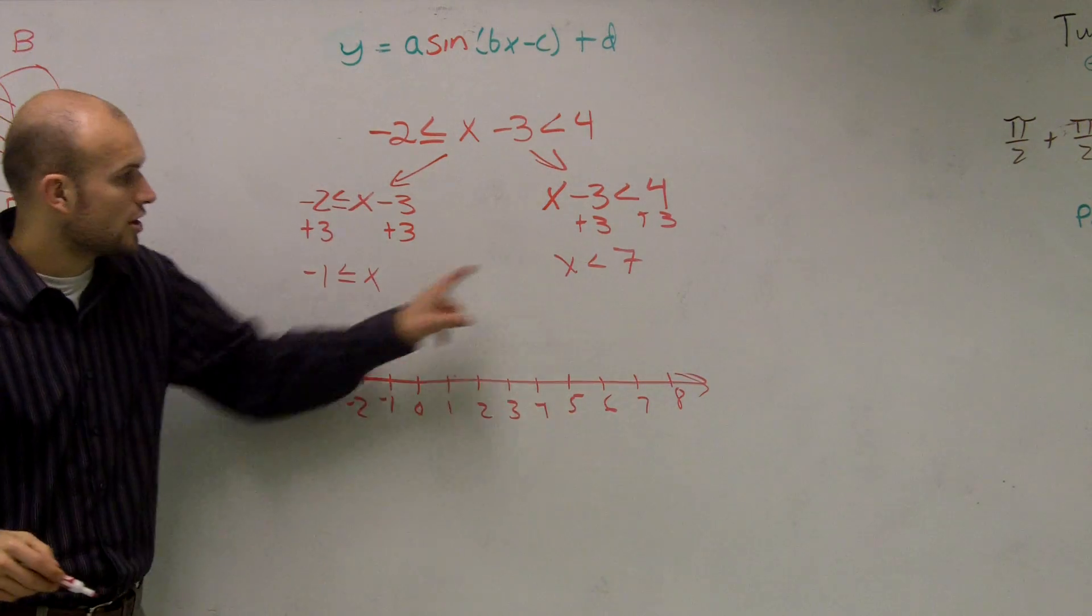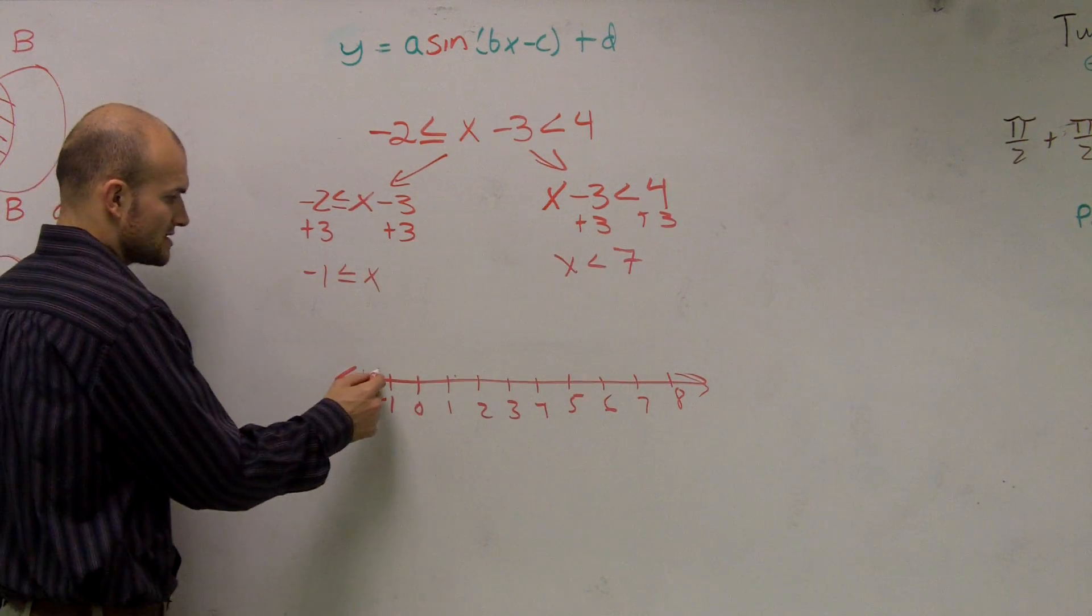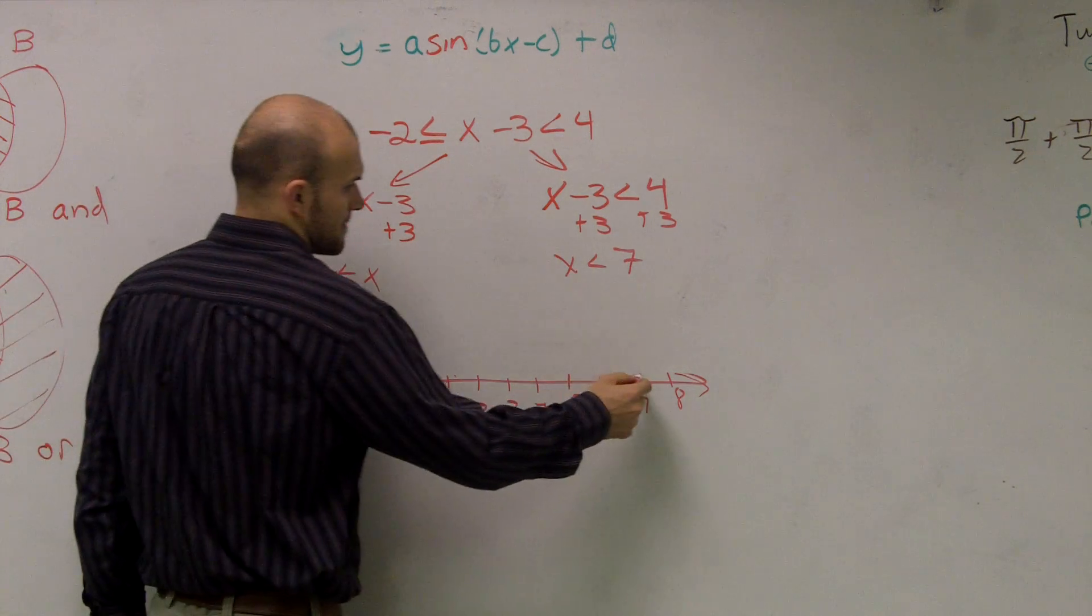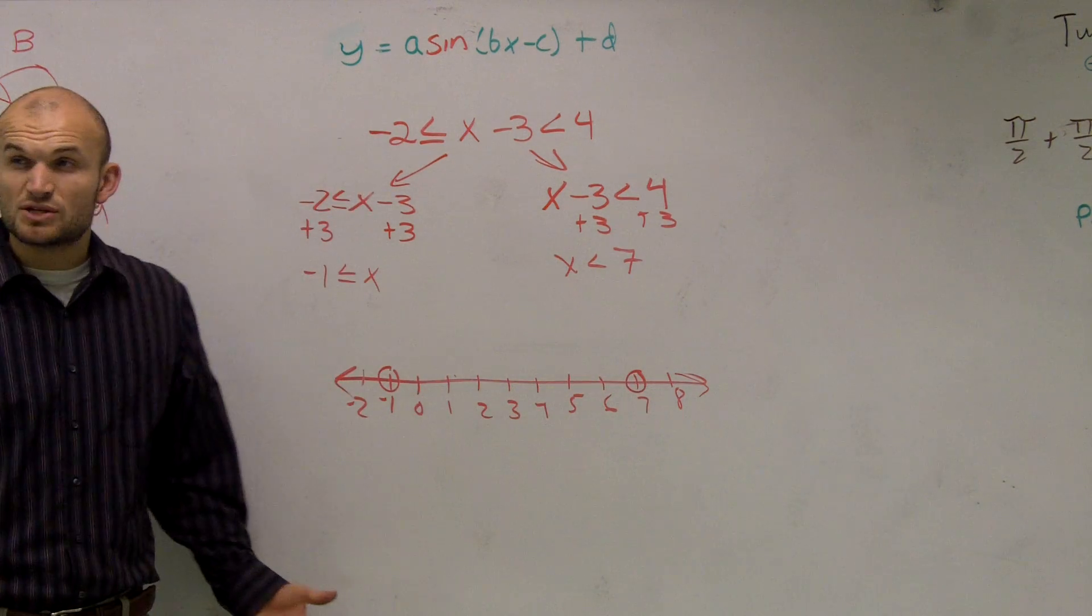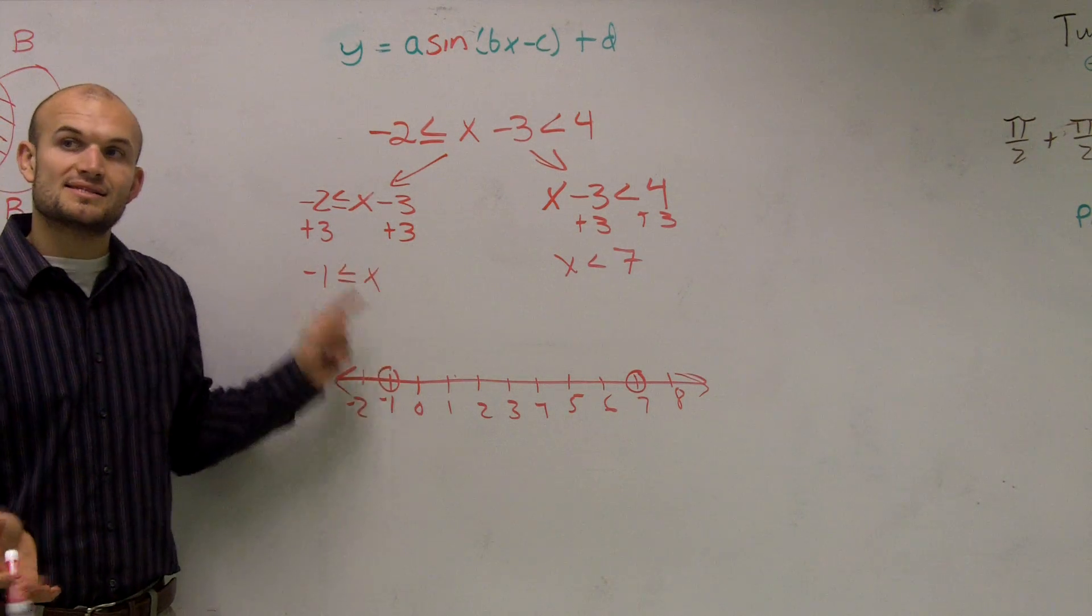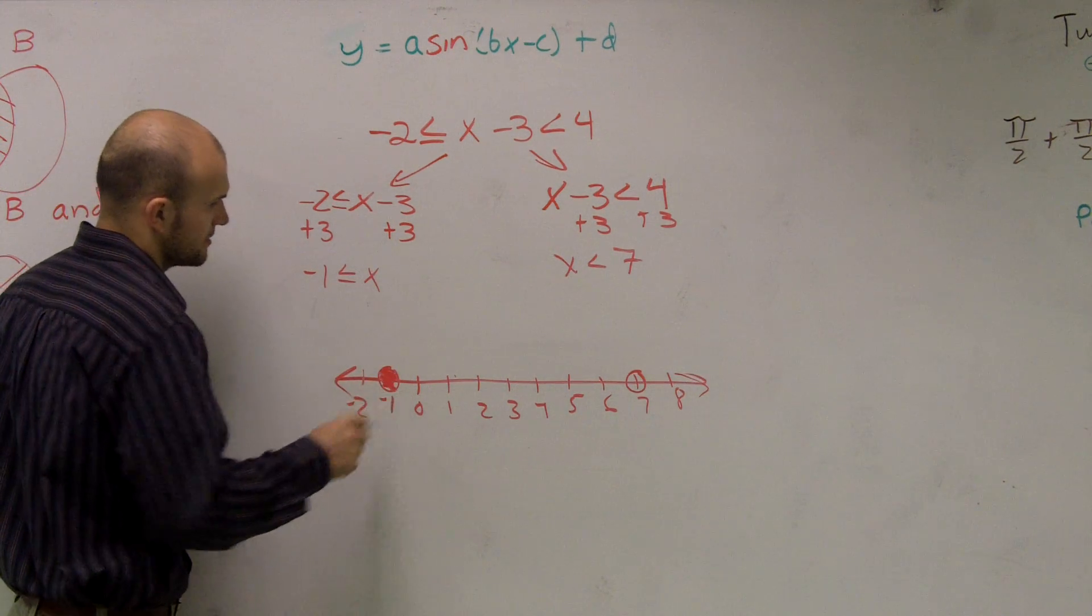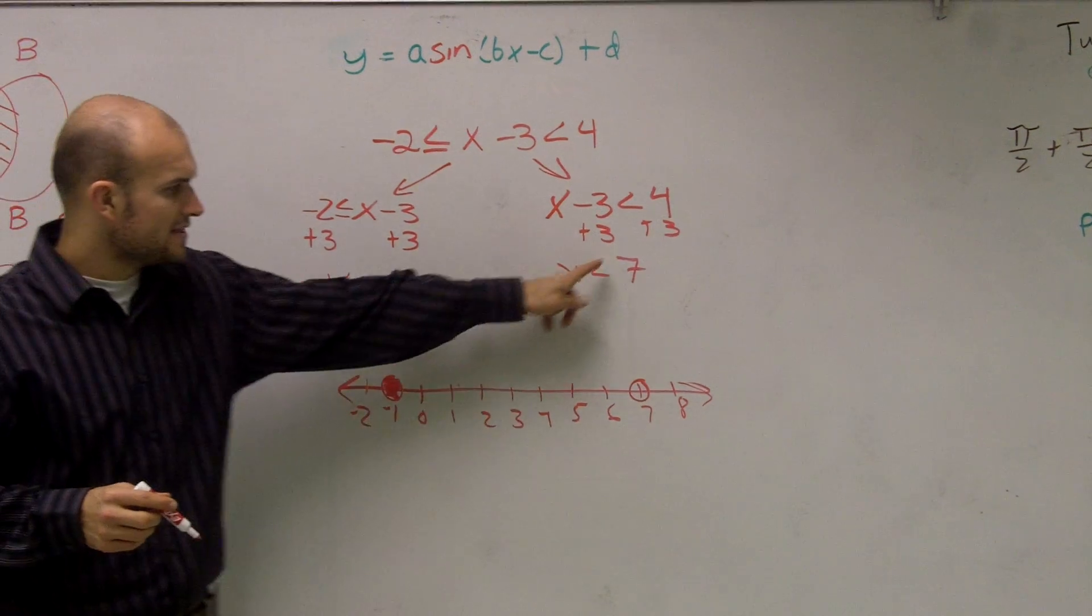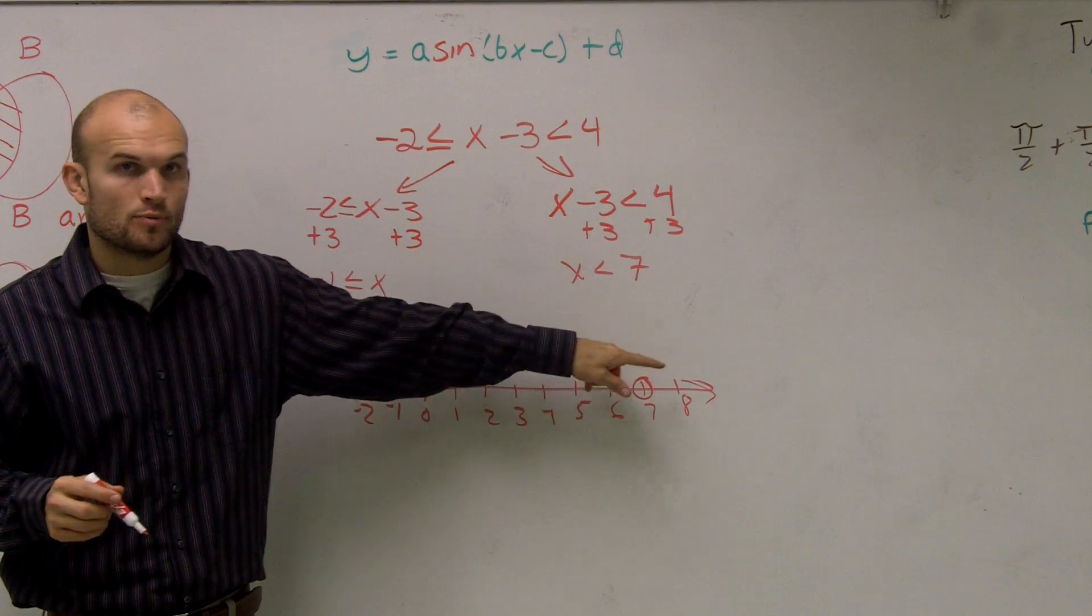So I make a circle at each of these points. I need to determine which one's going to be filled in and which one's open. Remember, since this is less than or equal to, it's going to be filled in. And this one, since it's just less than, it's going to be open.